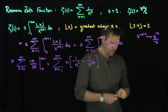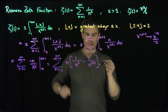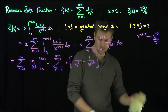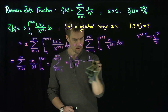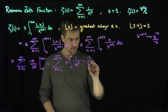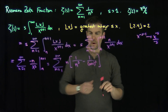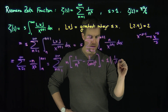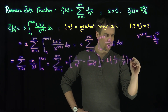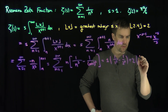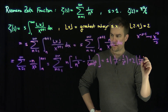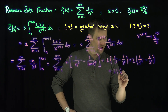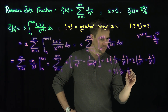Let's look at the first few terms of this series to see it telescopes. When n equals 1: 1 times (1 over 1 to the s minus 1 over 2 to the s). When n equals 2: 2 times (1 over 2 to the s minus 1 over 3 to the s). When n equals 3: 3 times (1 over 3 to the s minus 1 over 4 to the s), and so on.